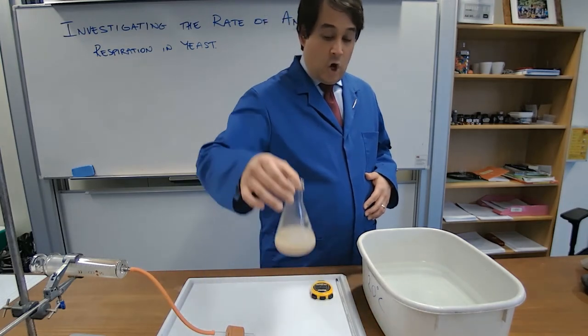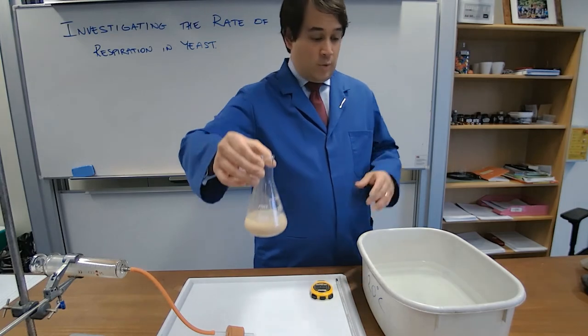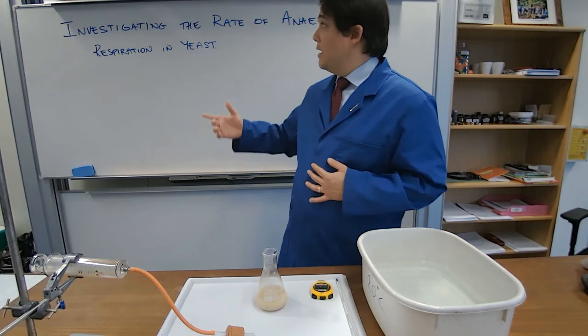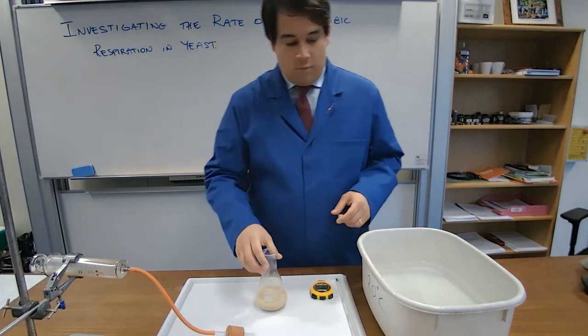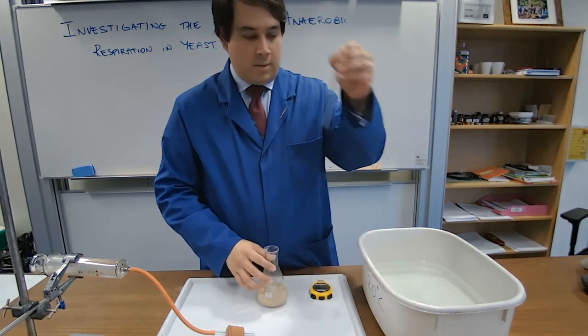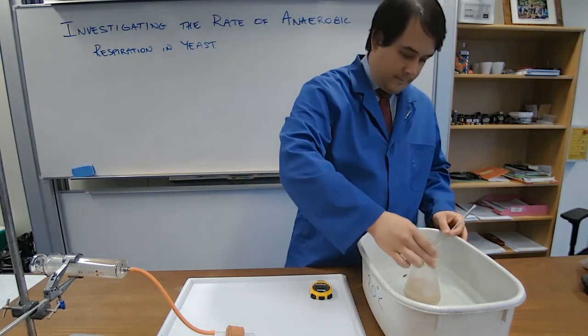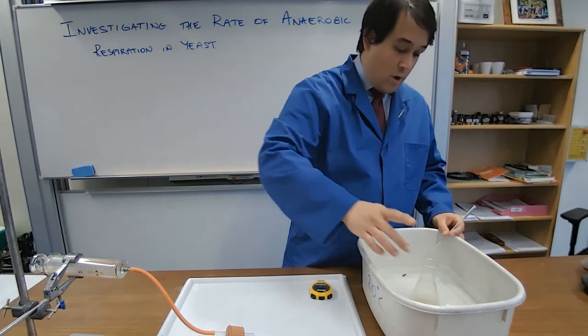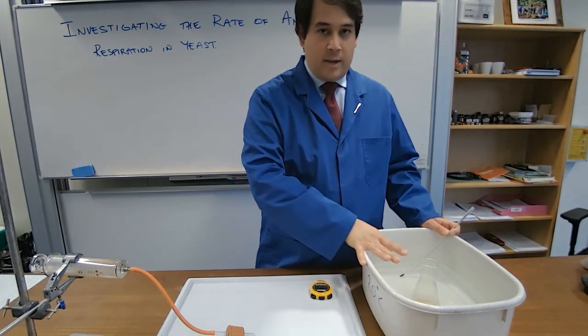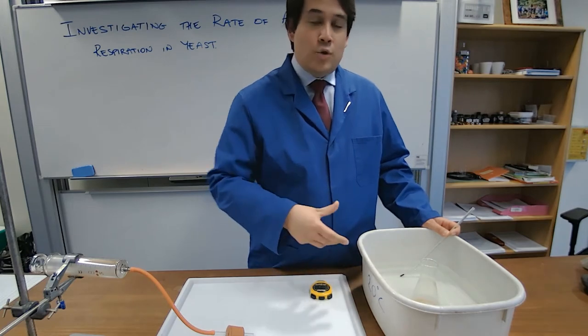Now that that's on, we then need to put that into the water bath at different temperatures. So, supposing we were investigating the rate due to temperature, we would then have water baths at different temperatures. Water bath, thermometer, yeast in. We are then going to allow the yeast to rest in here for 15 minutes so it acclimatizes to that temperature.